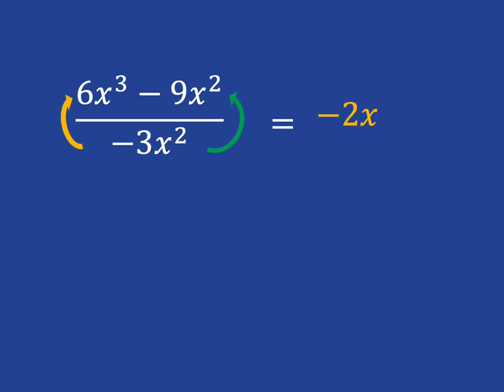Then I need to divide -9x² by -3x². Negative divided by negative gives me positive, 9 divided by 3 gives me 3, and x² over x² gives me 1, so I've got plus 3.